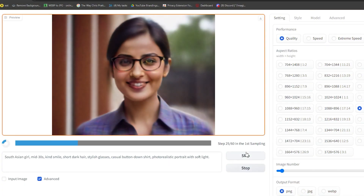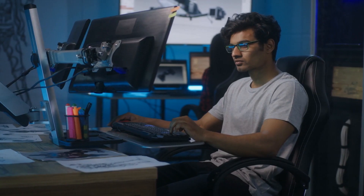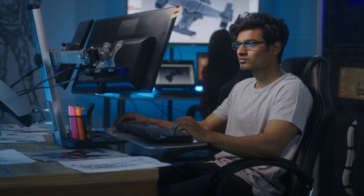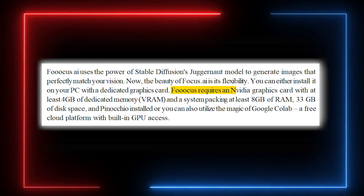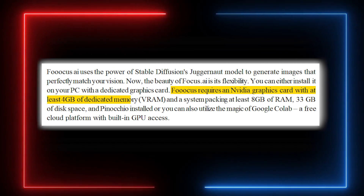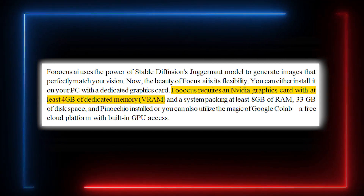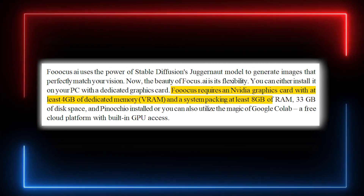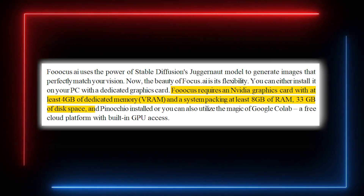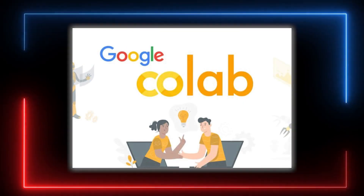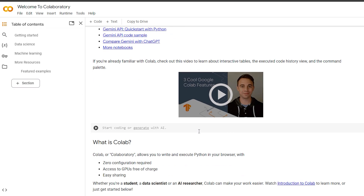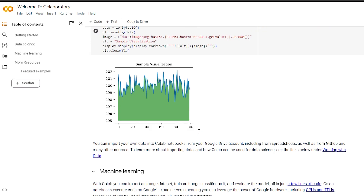The beauty of Focus.ai is its flexibility. You can install it on your PC with a dedicated graphics card. Focus requires an NVIDIA graphics card with at least 4GB of dedicated memory, or VRAM, and a system packing at least 8GB of RAM, 33GB of disk space, and Python installed. Or you can also utilize the magic of Google Colab, a free cloud platform with built-in GPU access.